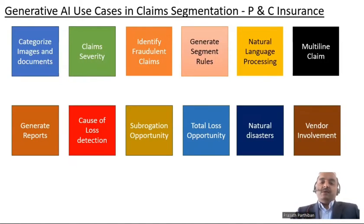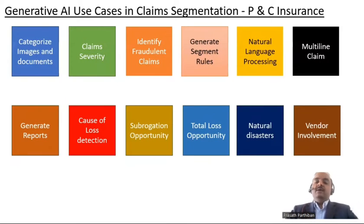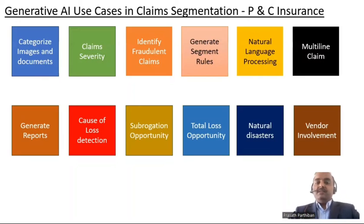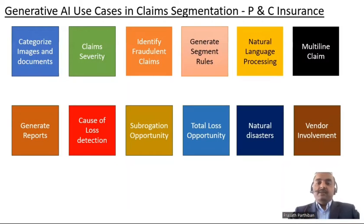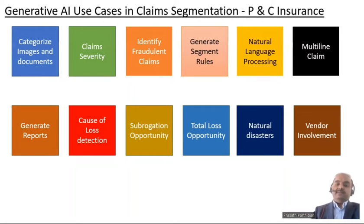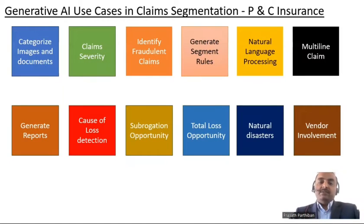Prior to artificial intelligence, we had to do a lot of things manually, where someone like a CSR — Customer Service Representative — would have to look at the claim and do the segmentation. With artificial intelligence, we can read structured and unstructured data including documents, and we have the ability to generate content, so we can enhance this entire claims segmentation process. In this slide I have included some of the use cases where we can use generative AI.